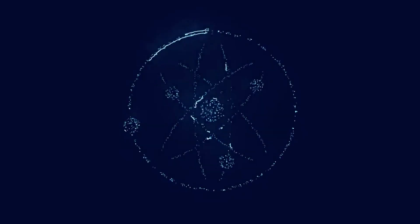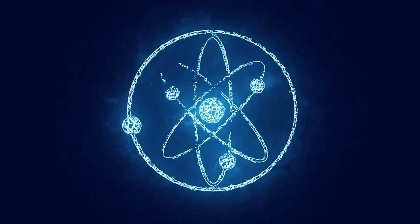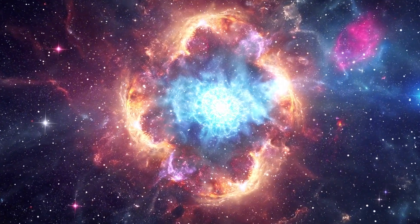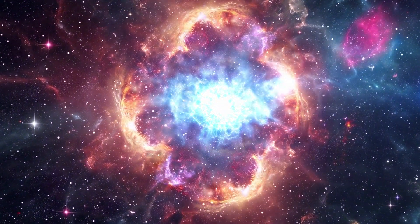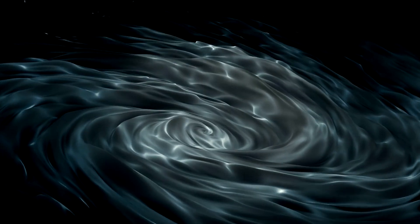And yet, as deadly as they are, neutron stars are still delicate in the grand balance of physics. Add just a bit more mass, and even these monsters can't survive. If a neutron star grows too heavy, gravity crushes it further, beyond the point where even neutrons can resist. At that moment, it collapses again, becoming something even darker. A black hole.